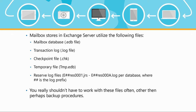The checkpoint file is especially helpful in failure scenarios. Imagine the Exchange server was in the middle of committing something to the log and was about to write it to the database when the power went out. When the server comes back online, it checks the checkpoint file, sees that the data wasn't yet committed to the database, and commits it then. This prevents data corruption or data loss.